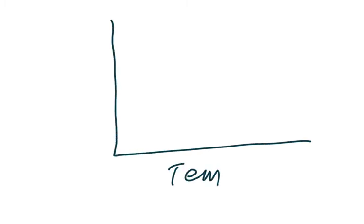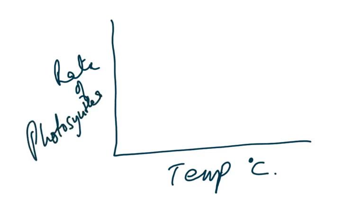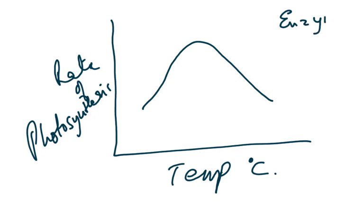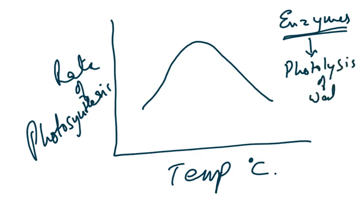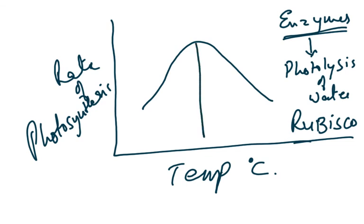For the temperature graph, plot temperature on the x-axis and rate of photosynthesis on the y-axis. You get an enzyme-shaped curve: the rate rises, reaches a peak, then drops. This confirms photosynthesis is an enzyme-controlled reaction — we need enzymes for the photolysis of water and for the famous enzyme rubisco in the Calvin cycle.